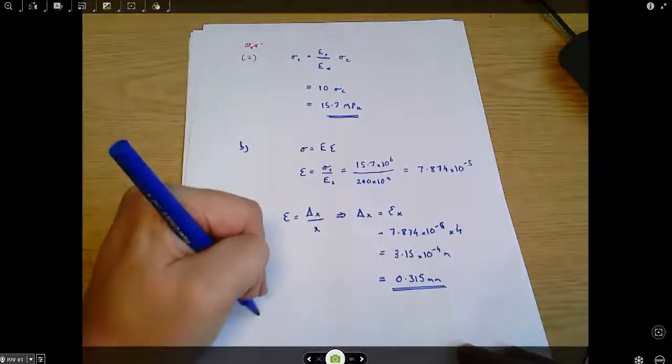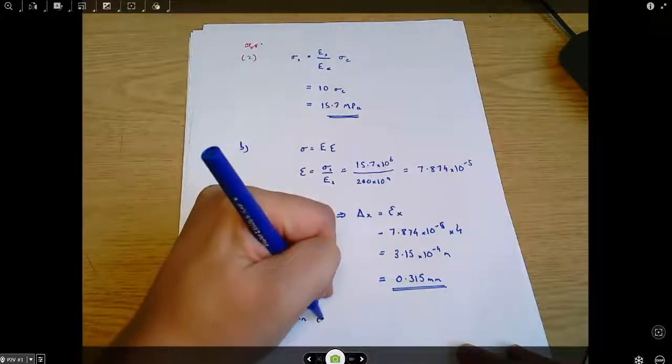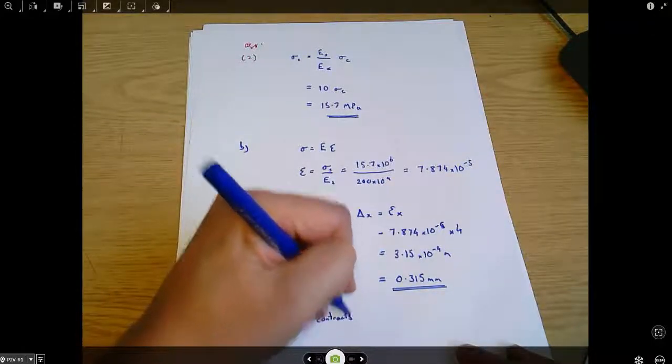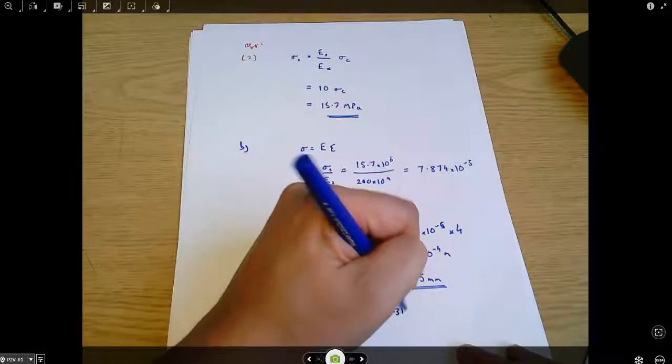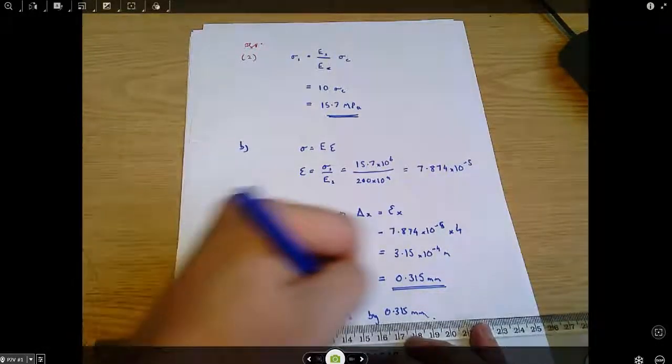So the column contracts or shrinks by 0.315 millimeters. And that's our answer.